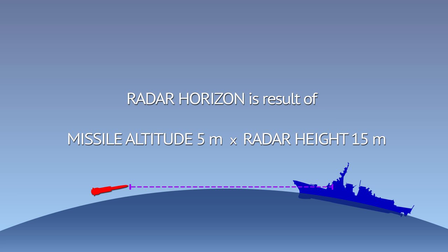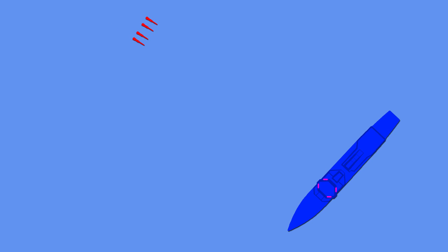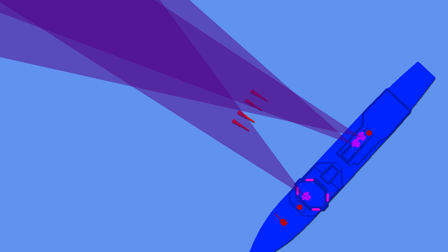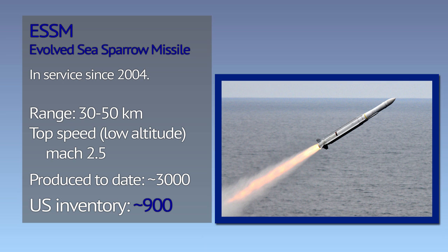If the missiles are all coming from a single direction, the ship would turn its side towards the attacker. It has more radar arrays facing the incoming missiles that way, as well as more weapons available. Several seconds later, the targets would be classified and Evolved Sea Sparrow missiles fired.